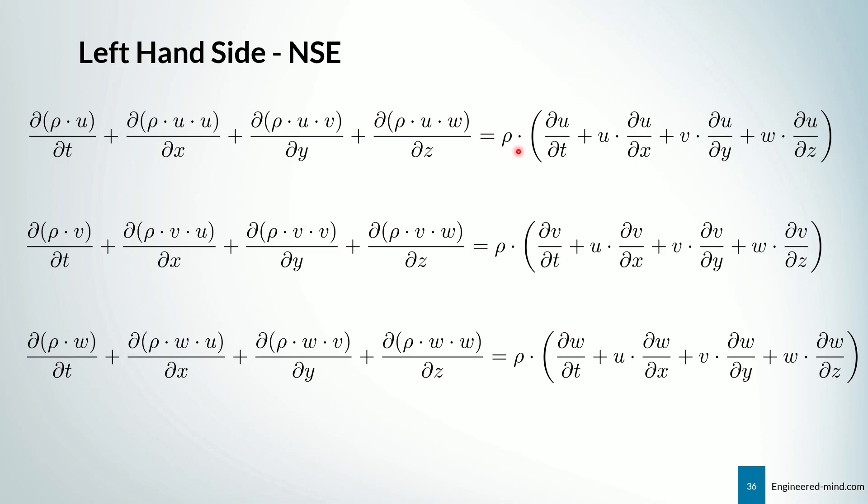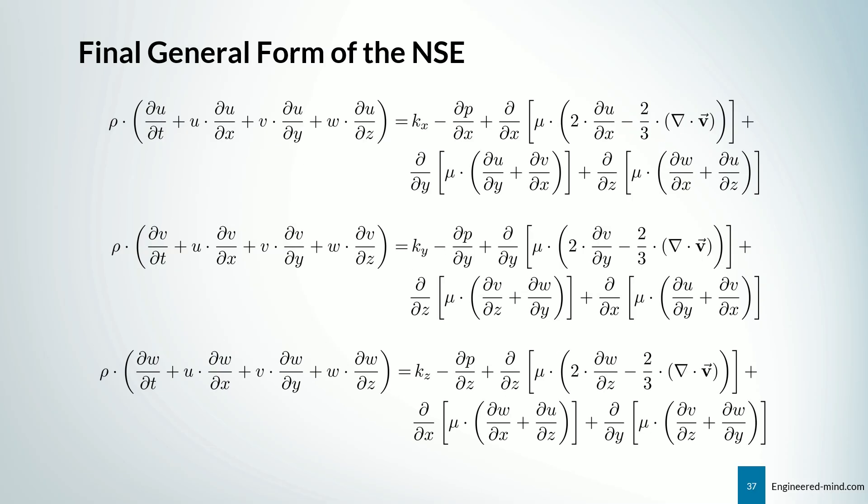And what we then have is the left hand side of the Navier-Stokes equation looks like this. And we can just rewrite it in a more compact form. We put rho out of the equation. And we say we have du by dt plus u times du by dx and so on.